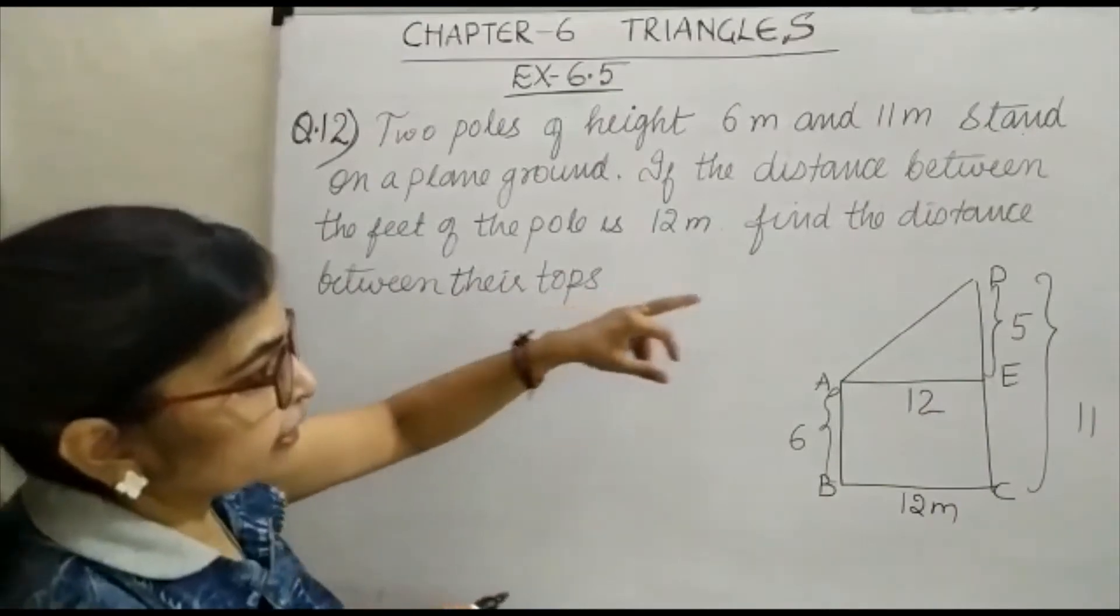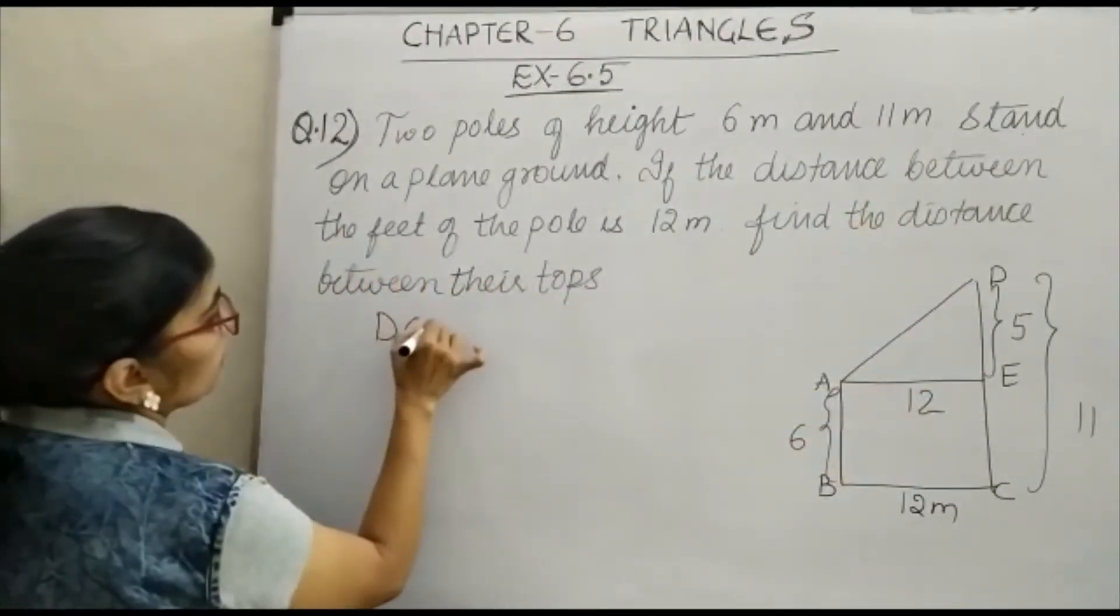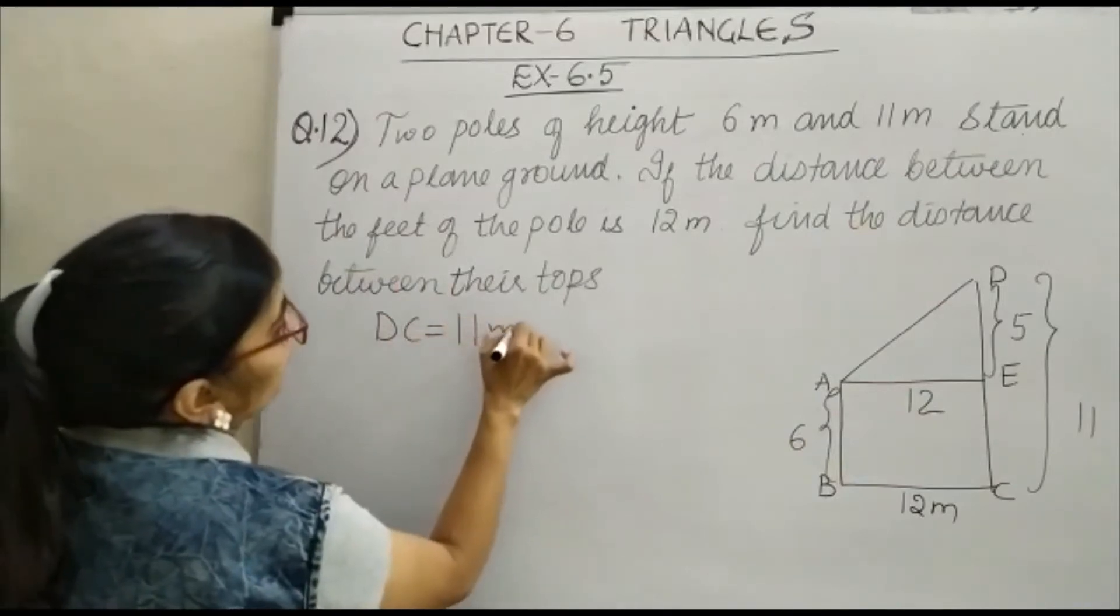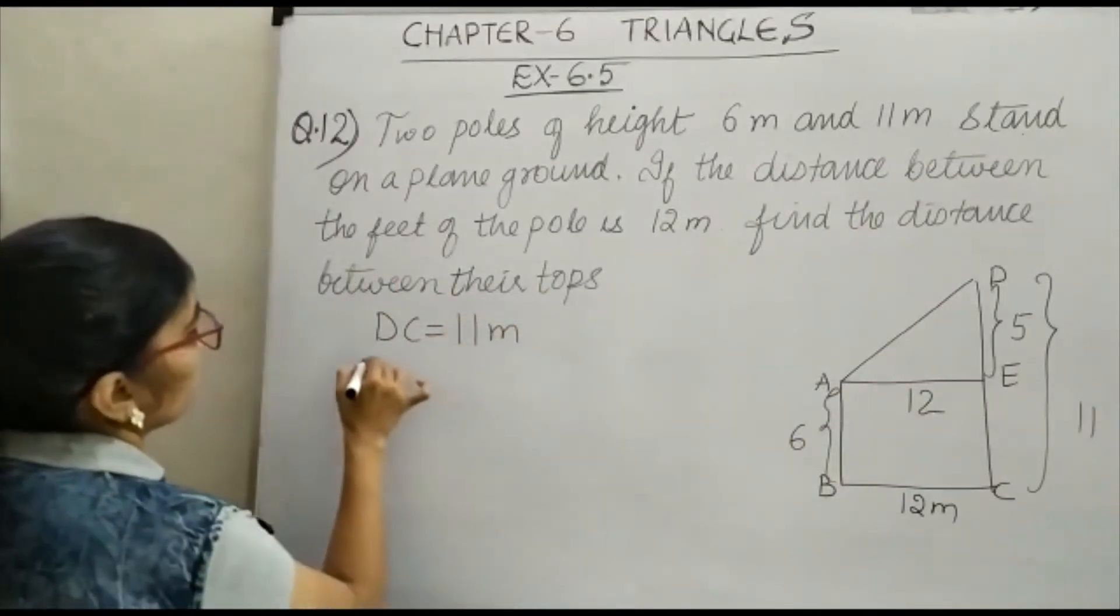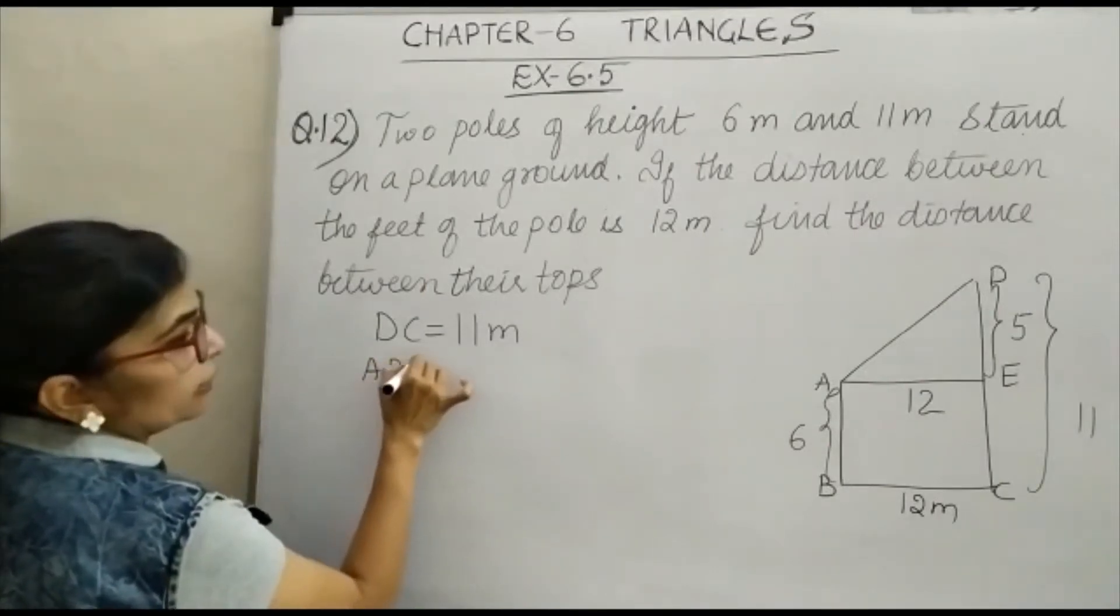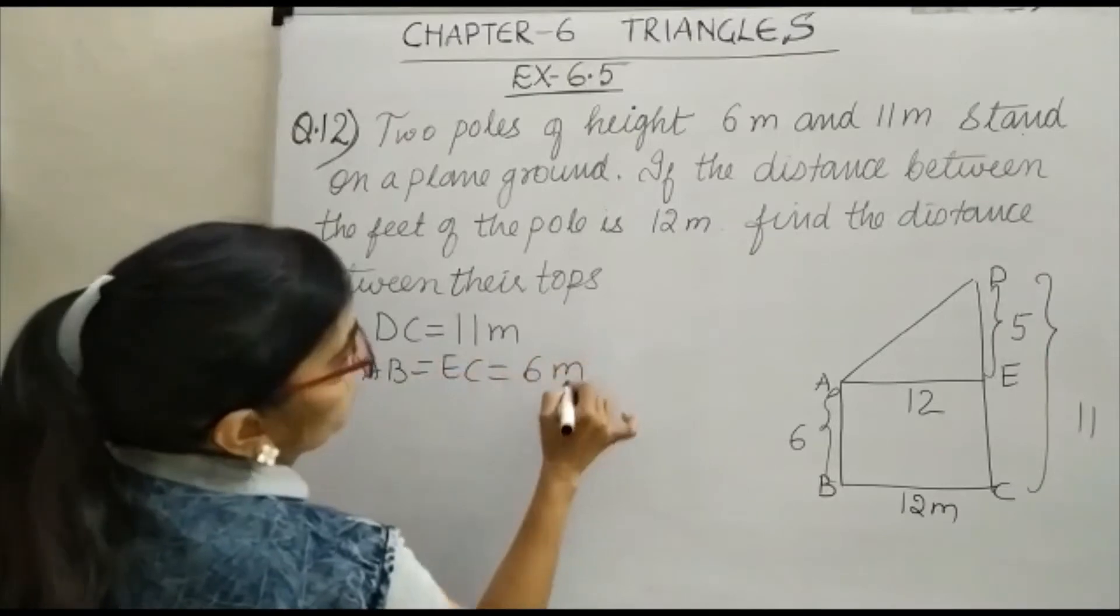Just see here. At A, here you have DC. Your DC is equal to 11 meter. And your AB is equal to EC is equal to 6 meter.